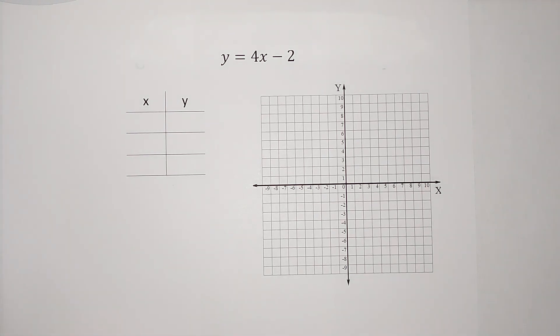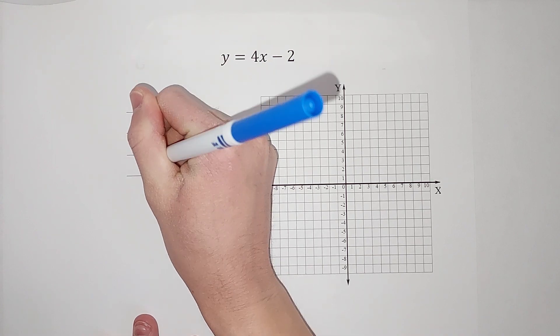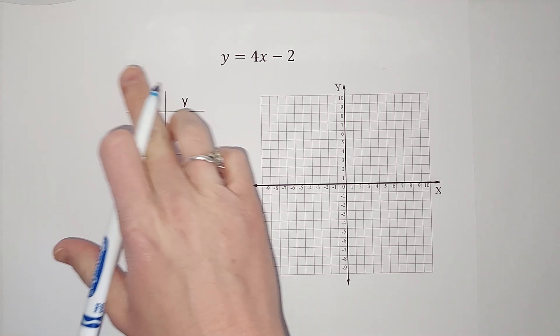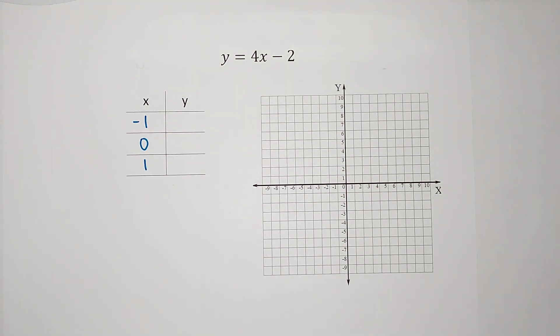What you'll see a lot of times is people will plug in negative 1, 0, and 1. But you don't have to. That's just us trying to be nice and easy to ourselves. So we are going to plug these in for x and see what we get for y.